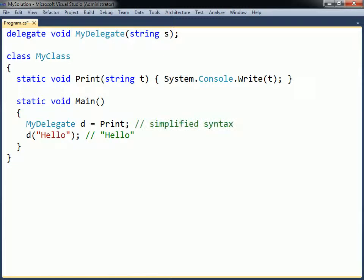The syntax used here to instantiate the delegate is actually a simplified notation introduced in C-sharp 2.0. The backwards compatible way to instantiate a delegate is to use the normal reference type initialization syntax.